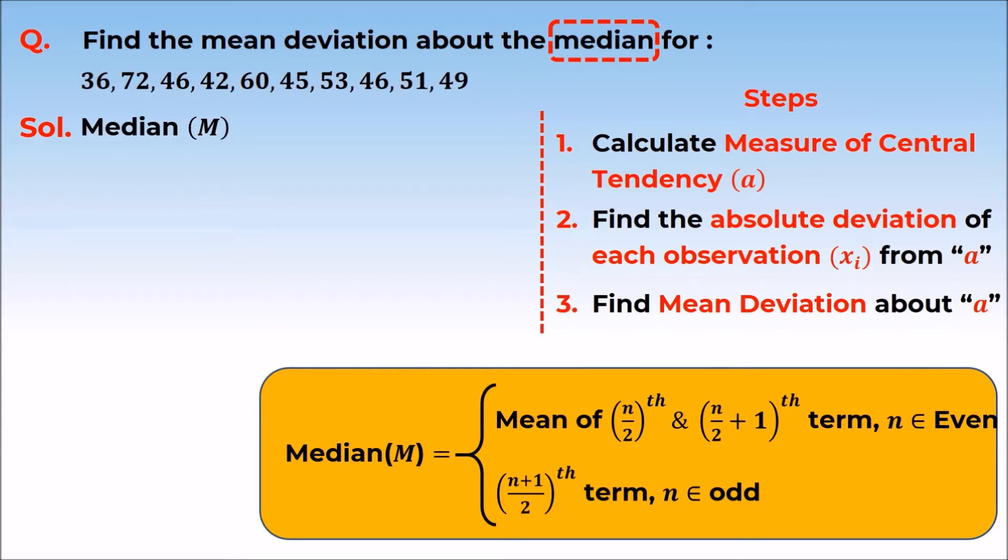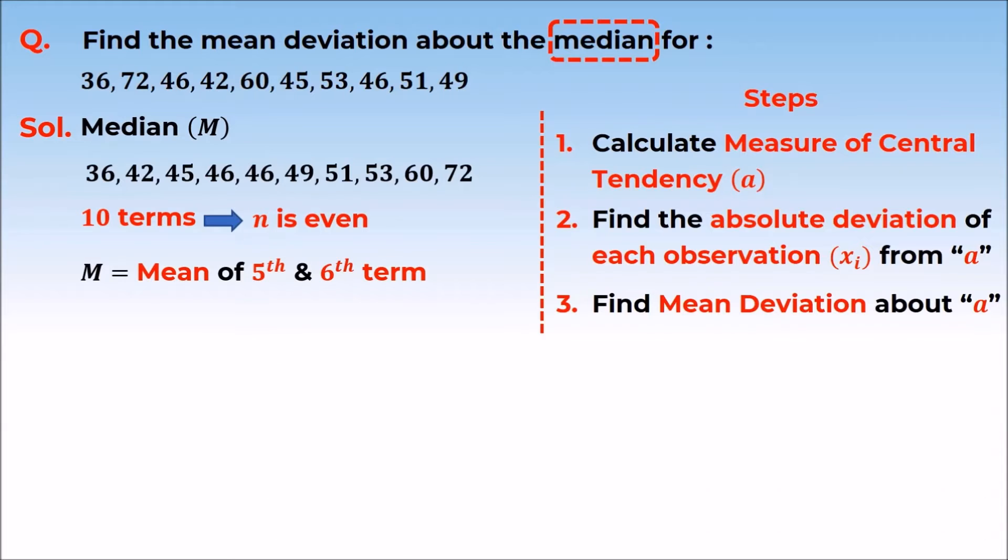If we look at given data, the number of terms is 10, and this is an even number. So in this case, the median will be equal to the mean of the 5th and 6th term.